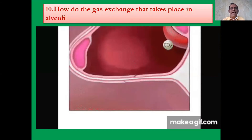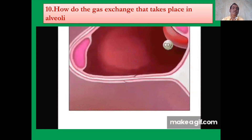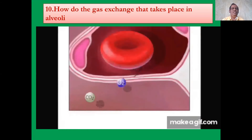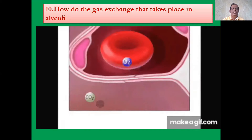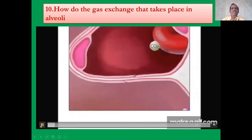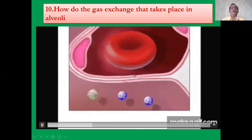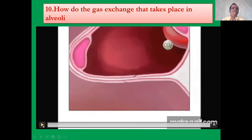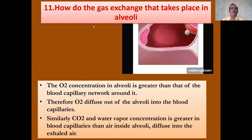How does gas exchange take place in the alveoli? The oxygen concentration inside the alveoli is high — rich in oxygen — while in the blood capillary network it is lower. Therefore oxygen diffuses through the thin membrane. The red blood cells bring carbon dioxide to be sent out and take oxygen in. The red blood cells have hemoglobin — the red color pigment — so oxygen combines with hemoglobin and is converted into oxyhemoglobin, which carries oxygen to the cells.